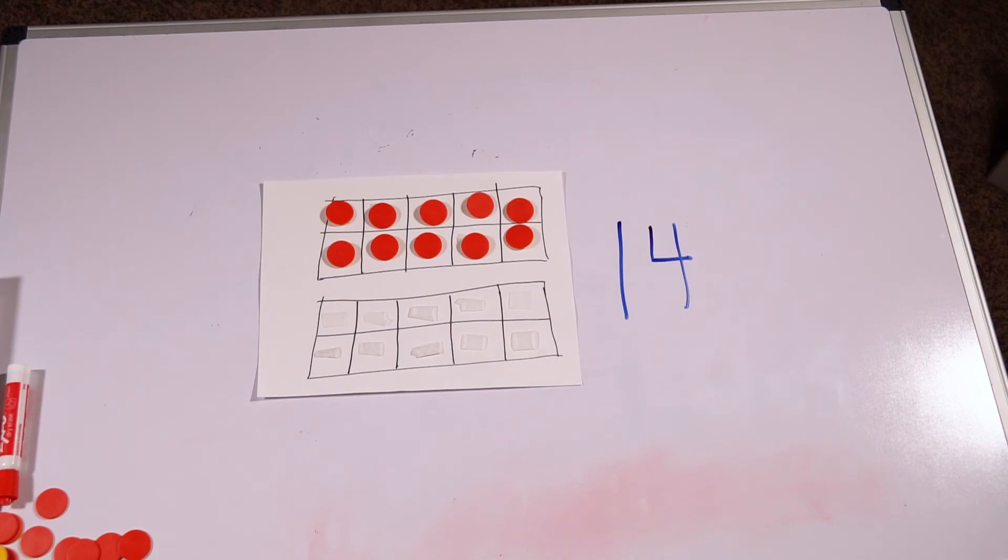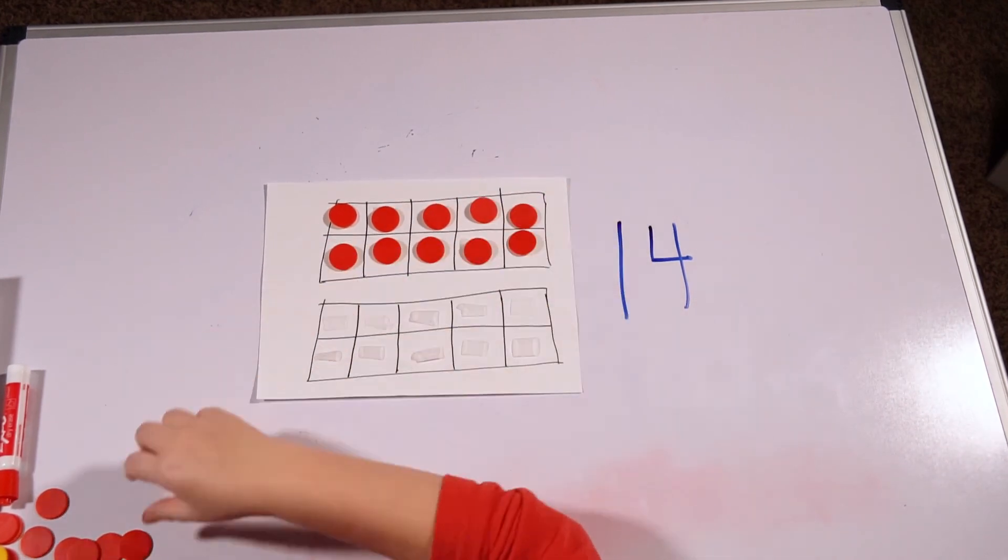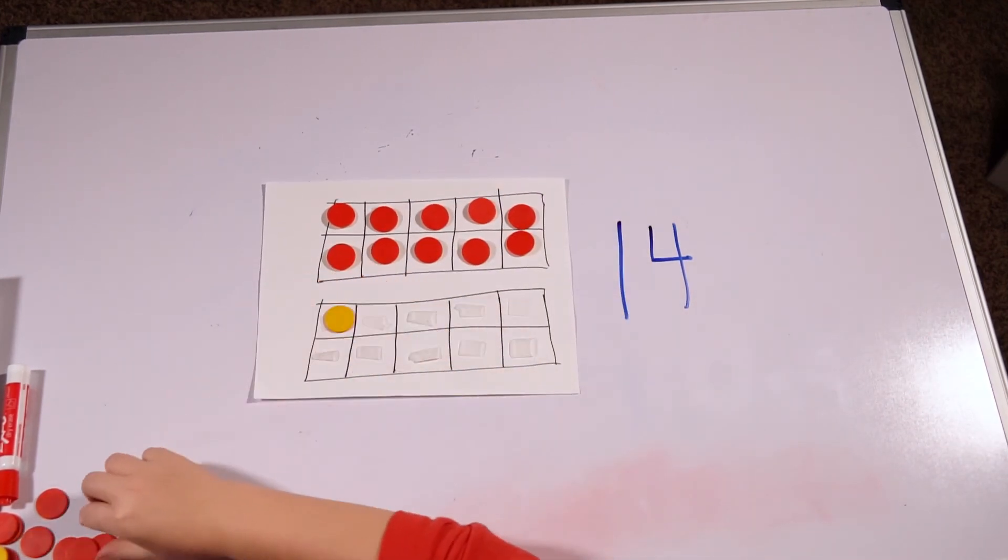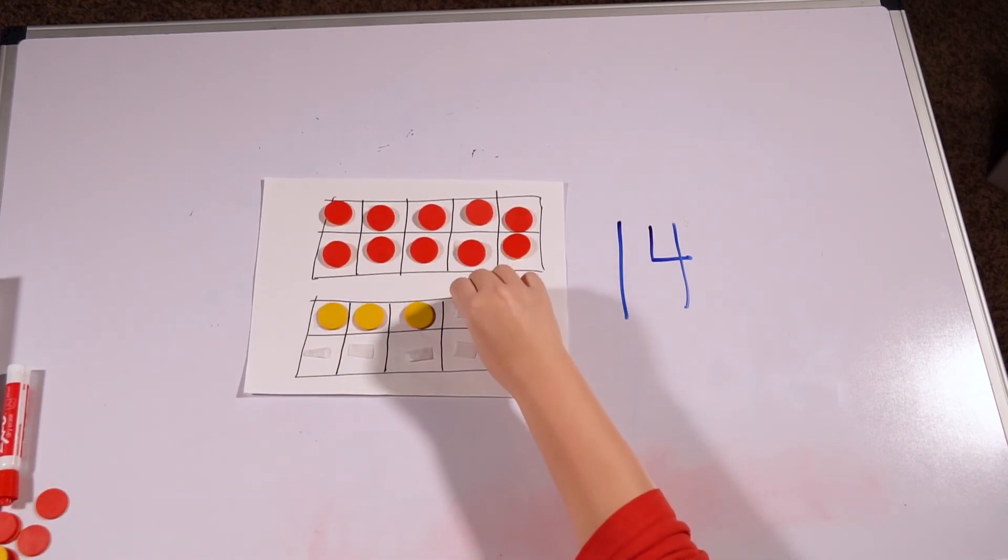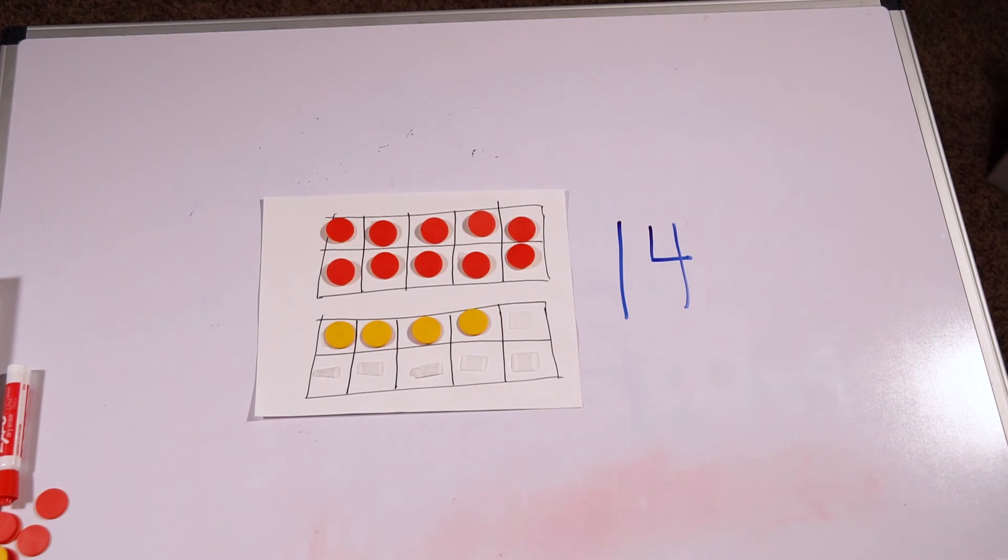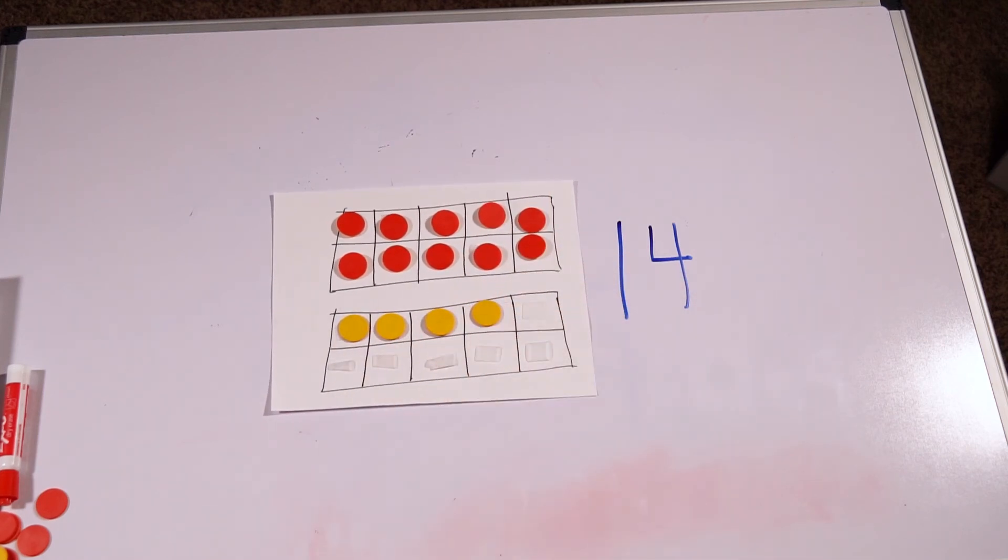All right, it's time for the answer. Let's see. I don't need to count these because I know that there's 10. 10, 11, 12, 13, 14. Friends, how many did I add? You are absolutely right. I added four. So 10 and four more makes 14.